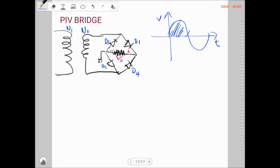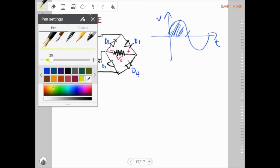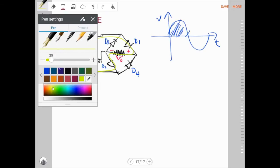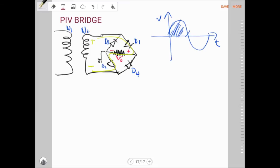In the positive cycle, it will be positive here, negative here, and the current will flow through here like this and complete the circuit. If I redraw the circuit over here, it will look like this.